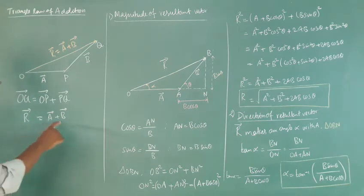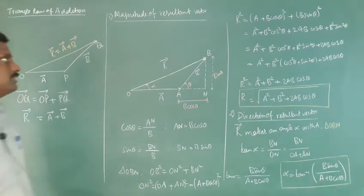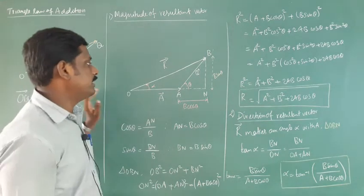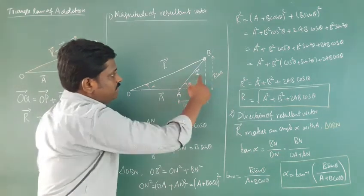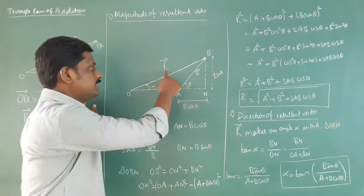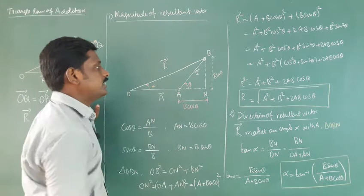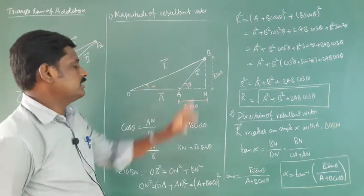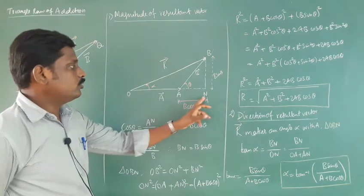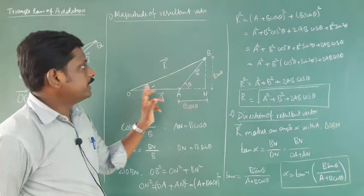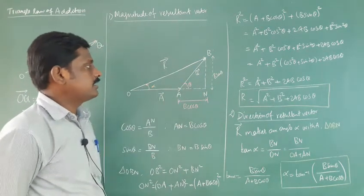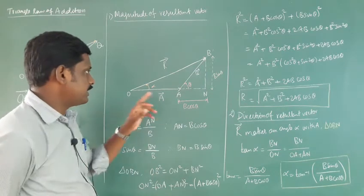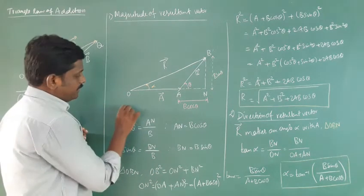To find the resultant vector we need both its magnitude and direction, so we need to go into more detail. Here OA is A vector and AB is B vector. The resultant vector is the addition of A vector and B vector. We extend the triangle from OA to ON, and at that point we get an additional right-angle triangle ABN.